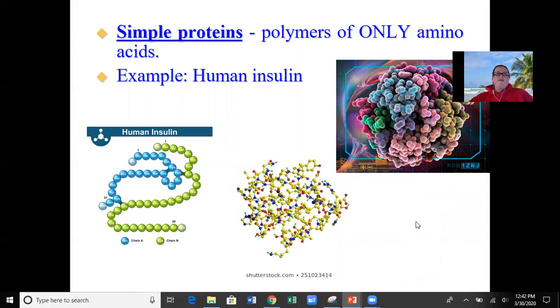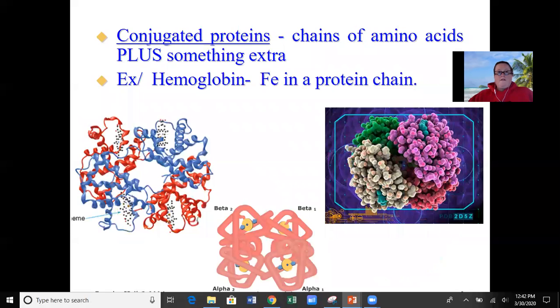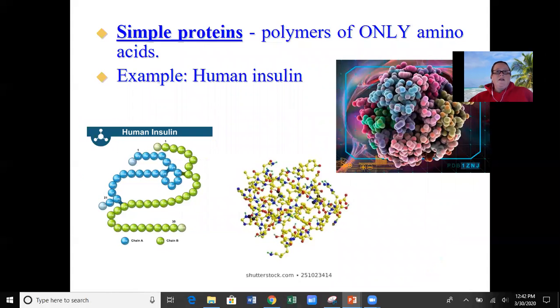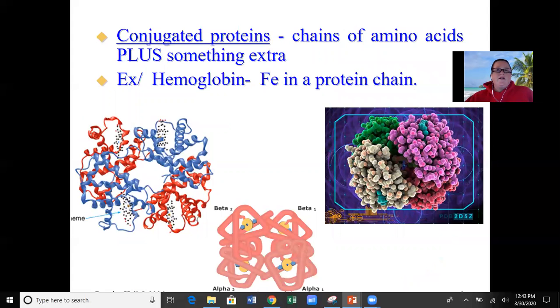So we can categorize proteins as simple proteins or conjugated proteins. A simple protein contains only amino acids linked together. And a conjugated protein contains amino acids plus something extra.